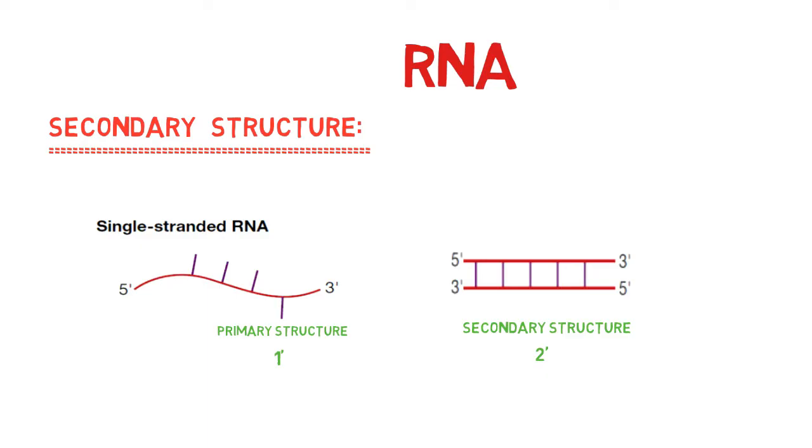The preferred structure of RNA is secondary, which has many structural patterns like helices, loops, bulges, and junctions.